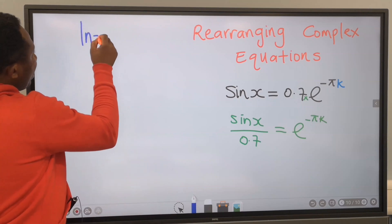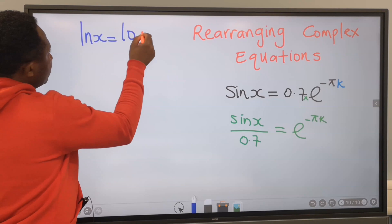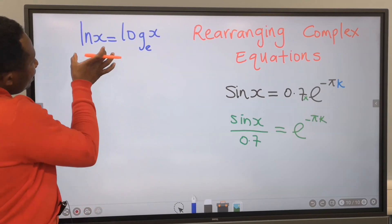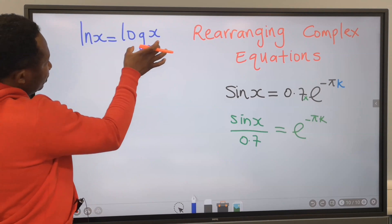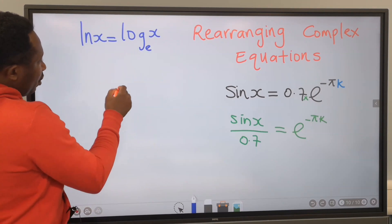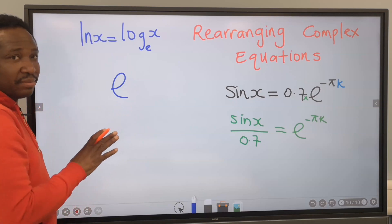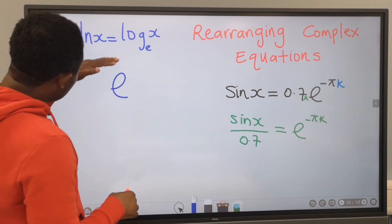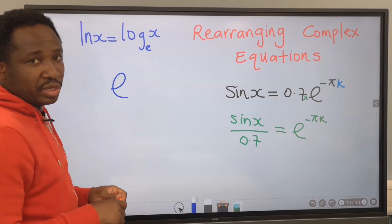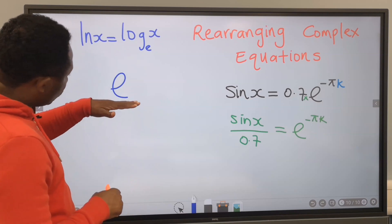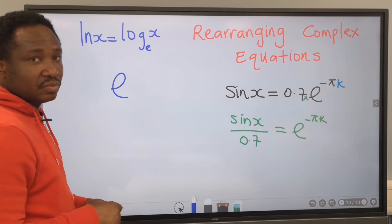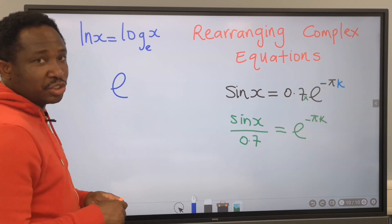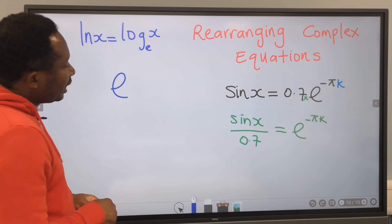In mathematics, the natural log of x is the same thing as log x of base e. The natural log of x does not agree with exponential in mathematics. Whenever you want to eliminate natural log in an equation, you introduce exponential. And whenever you want to eliminate exponential in an equation, you introduce natural log.